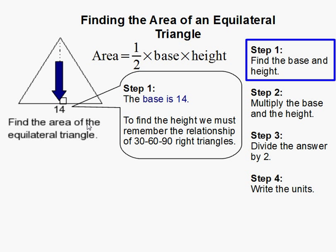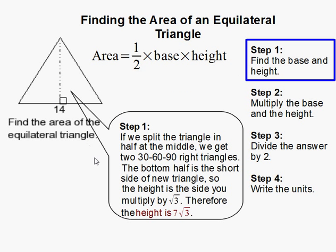Now, in order to do this, we need to remember the relationship of 30, 60, and 90 right triangles. If you in fact split it in half, we can then try to find the height. So what you need to do is, if I split it in half, I get a 30, 60, 90 right triangle. And let me explain why.